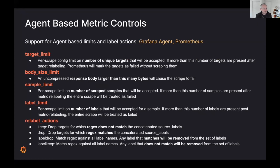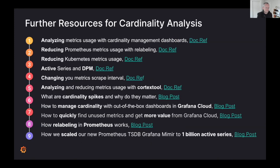You can use the cardinality analysis dashboard to identify metrics that can be reduced and remove them from your services. This may involve changes to the source code of your services or changes to the configuration of Prometheus exporters that scrape those metrics. You can also leverage Prometheus limits and relabel actions in the Prometheus configuration to drop them at collection time. Here are some of the actual Grafana Agent and Prometheus configuration limits and relabel options available to reduce the number of metrics or prevent additional labels being added.